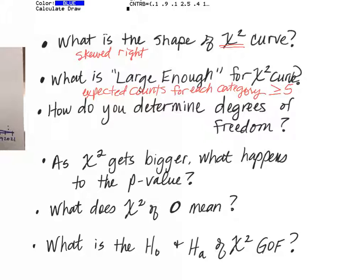How do you determine the degrees of freedom for this chi-squared goodness of fit test? It's categories minus one. So it's categories minus one instead of — what was it for the means test? N minus one. So it's not N minus one anymore, it's categories minus one.